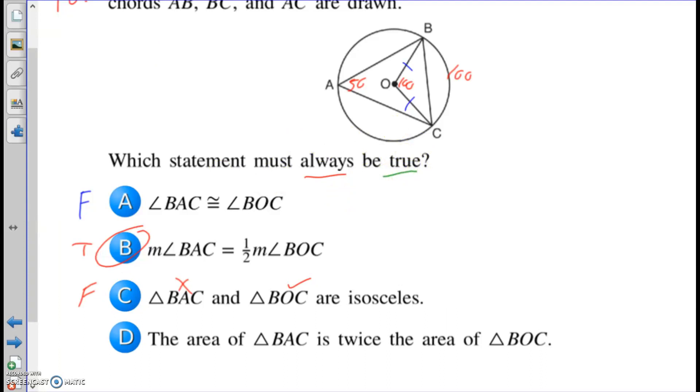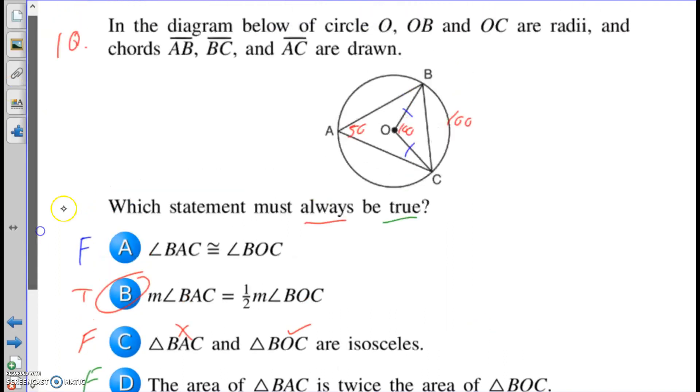So this is a great example of why you need to check all four choices, because I thought I was looking for a false. I thought I said not always true. And so I thought A was the answer. If I just moved on, I would have got it wrong. But because I kept going, I realized, wait, there's another false. Why would I have two falses? Then I realized I made my mistake. I'm looking for true. If the area is twice the area, that is going to be false. There's nothing telling me that the area should be twice the area just because one angle is twice the other.